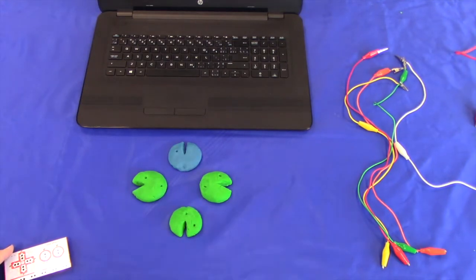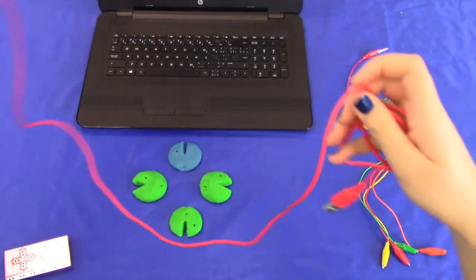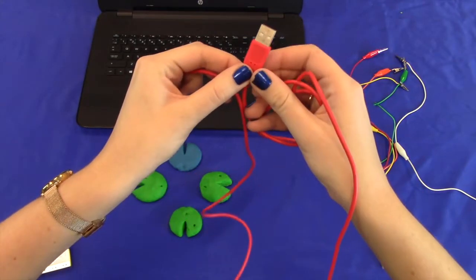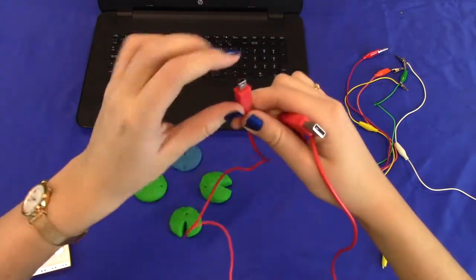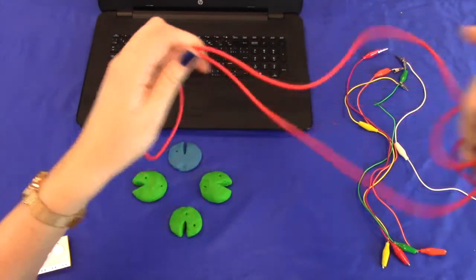The other thing included in your Makey Makey kit is a red USB connector that looks something like this. Unlike the alligator clips, it has a USB connector on one end and the smaller connector here, which will be connecting to the Makey Makey board itself.